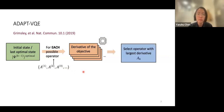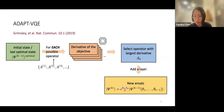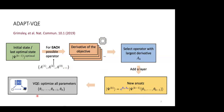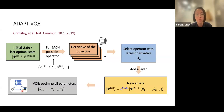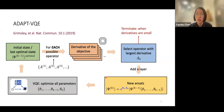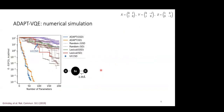We select the operator corresponding to the largest gradient magnitude and add it to our ansatz. With this new ansatz we perform the usual VQE optimization cycle, optimizing all parameters in the current ansatz to reach a new optimal state, which serves as the starting point for the next ADAPT round. This repeats until all measured gradients are small.